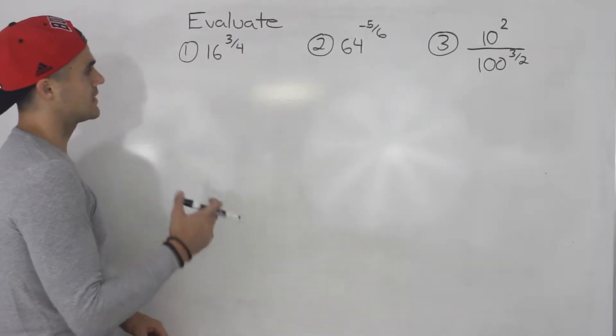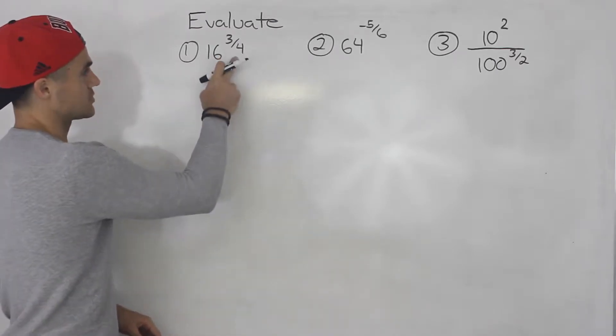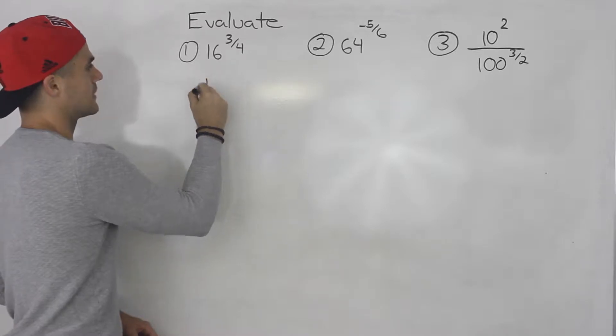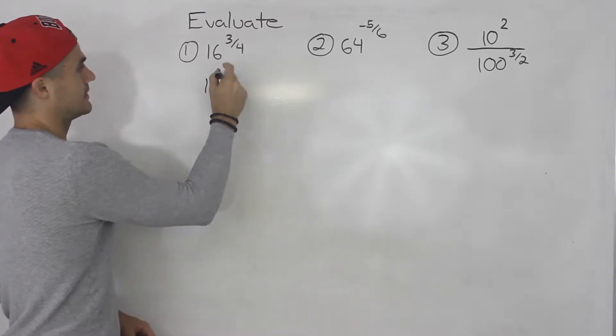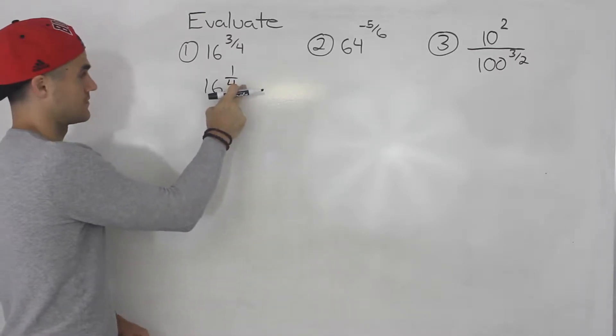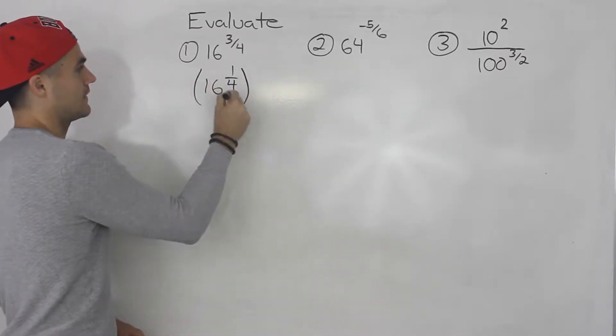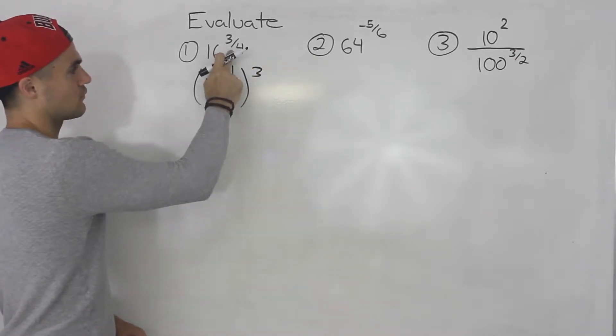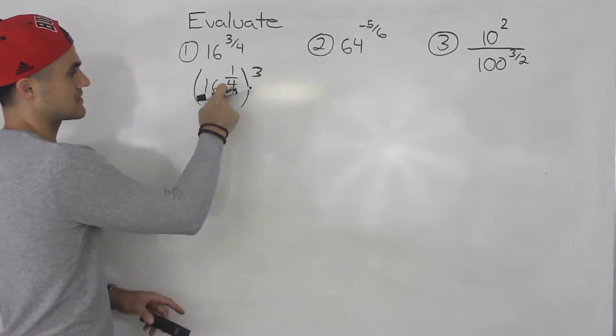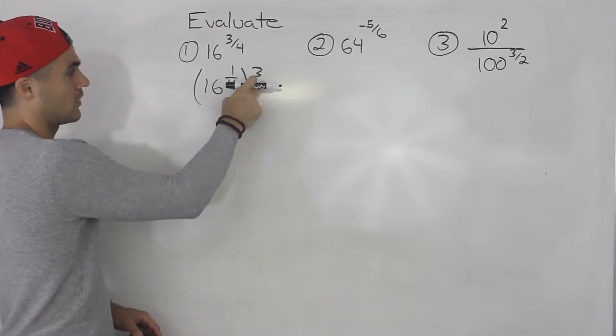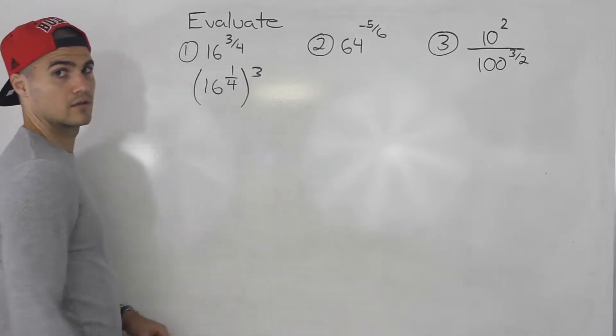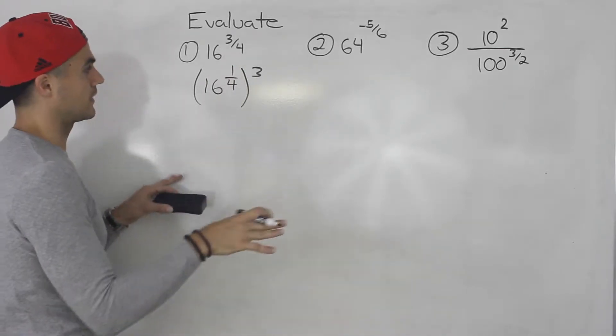As I mentioned in previous videos, when I see a rational exponent like this I like to split it up. The way I like to split it up is I put 1 over the denominator as the first exponent, and then take that all to the power of the numerator. This 3 over 4 we split up because 1 over 4 times 3 equals 3 over 4. So we're just splitting up the fraction.